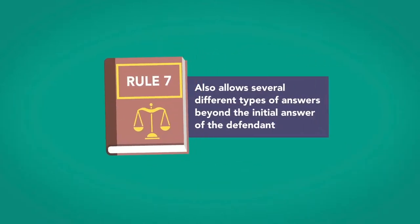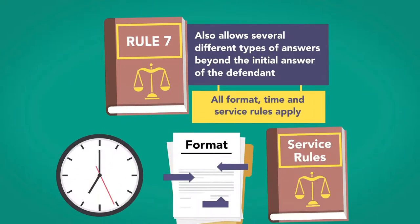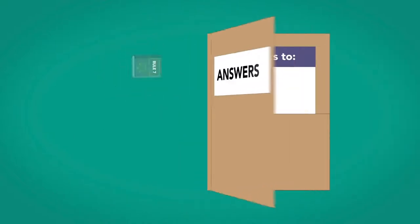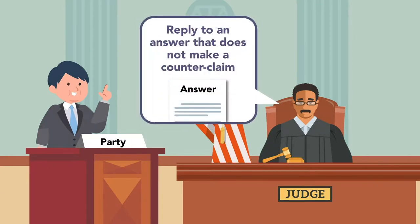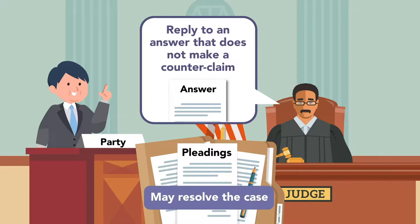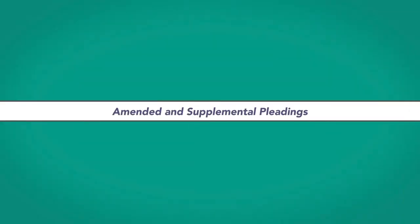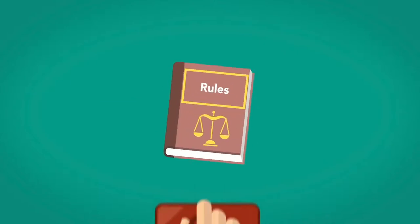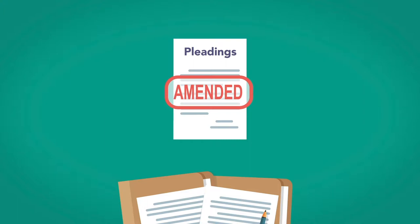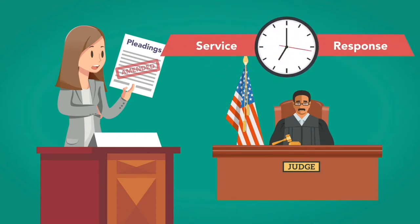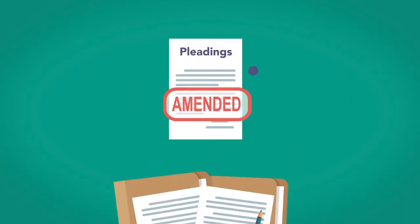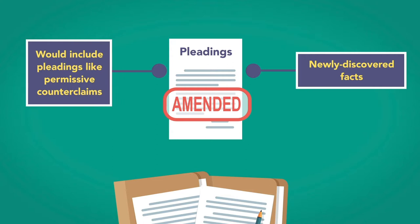Rule 7 of the federal rules also allows several different types of answers beyond the initial answer of the defendant. All format, time, and service rules apply to these pleadings as well. These include answers to counterclaims, crossclaims, and third-party complaints. A court may order a party to reply to an answer that does not make a counterclaim, particularly when the pleadings themselves may resolve the case. The rules allow parties to amend their pleadings and to supplement them under certain circumstances. A party may do this once as a matter of course, but then will have to petition the court to make any further changes. All service and response timeframes attach to these changes. Reasons to amend pleadings usually involve newly discovered facts and would include pleadings like permissive counterclaims.